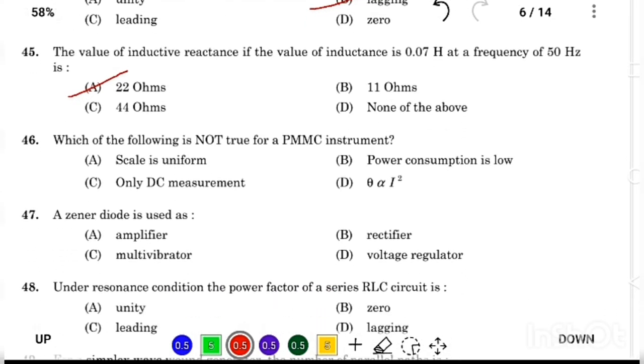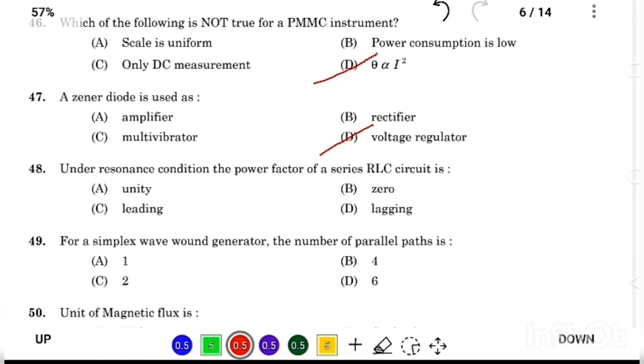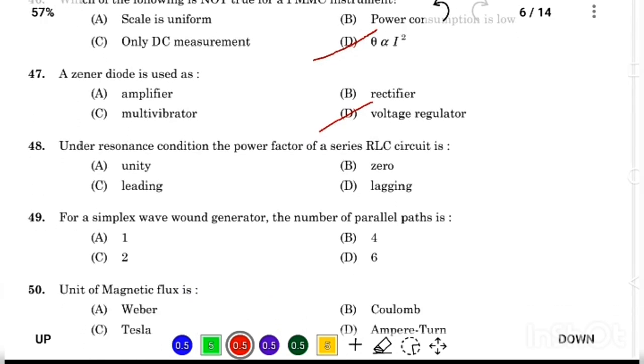Which of the following is not true for a PMMC instrument? Answer Option D. A Zener diode is used as Answer Option D, voltage regulator. Under resonance condition, the power factor of a series RLC circuit is Answer Option A, unity.